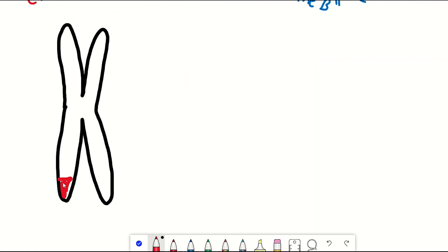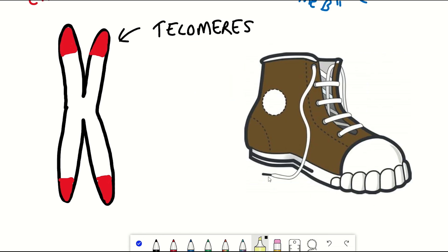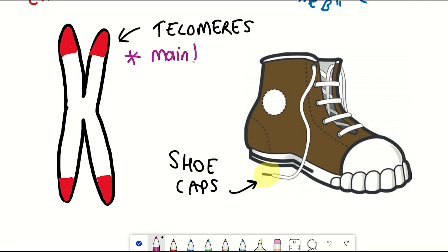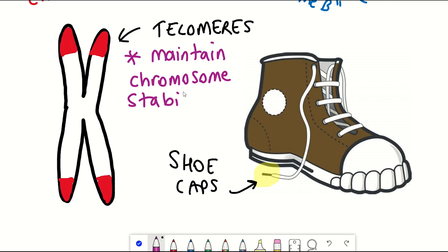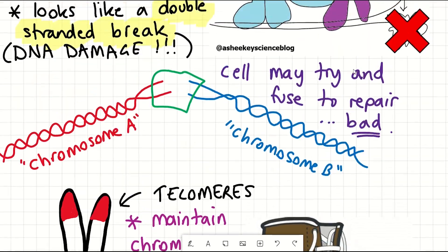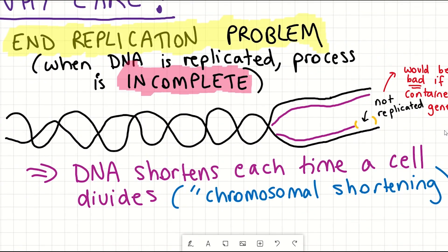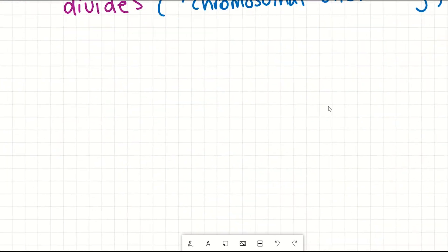For these reasons, telomeres are often described as being like the shoe caps at the end of your shoelaces — just as shoe caps protect the laces from unthreading, telomeres help to maintain chromosomal stability. Each time a cell divides, these telomeres get shorter because of the end replication problem.